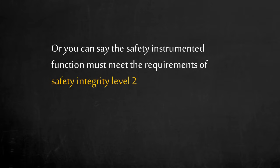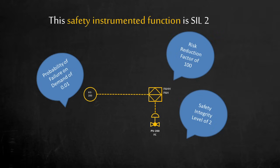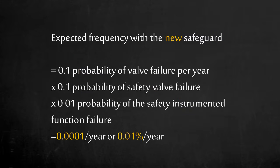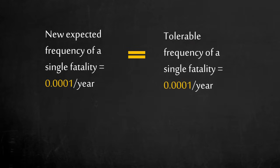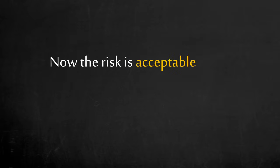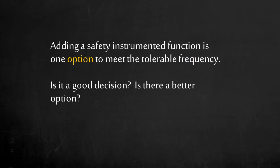We'll talk more about safety integrity level in another course. The combination of the sensor, logic solver, and final element meets the requirements of Safety Integrity Level 2. Now we calculate the new expected frequency of the system. The final result is 0.01% chance per year — the likelihood of the vessel overpressuring is within our tolerable frequency, and we can accept the risk. A safety instrumented function is one of the many ways to meet the tolerable frequency. This option requires adding hardware, but also requires operation to maintain this safety function. Can you think of any other way to lower the likelihood of a fatality?